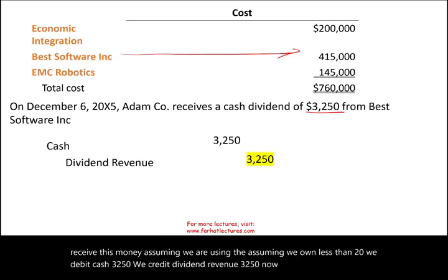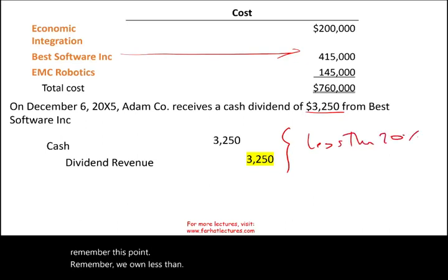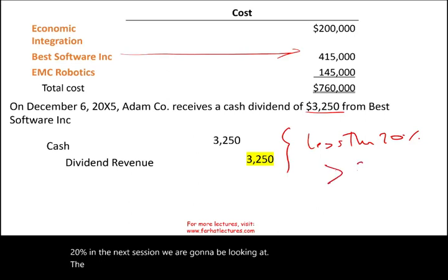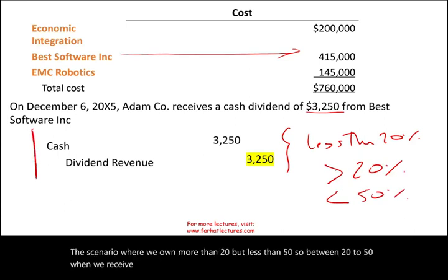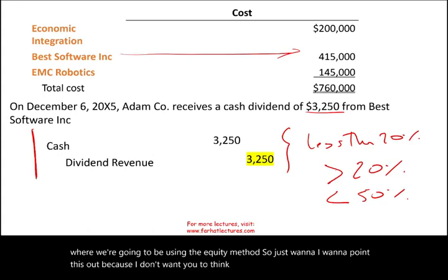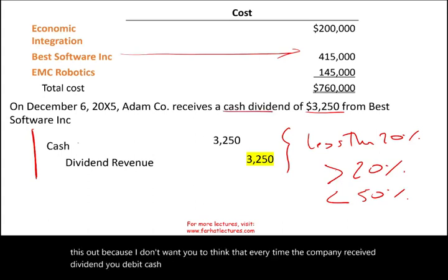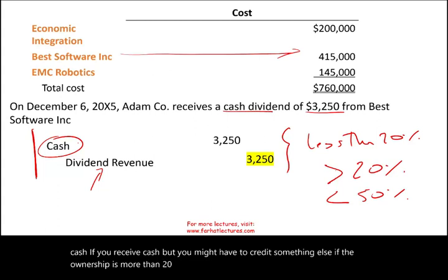I want you to remember this point — we own less than 20 percent. In the next session, we are going to look at the scenario where we own more than 20 percent but less than 50 percent, using the equity method. When we receive a dividend under that scenario, the transaction will be treated differently. You will always debit Cash if you receive cash, but you might have to credit something else if ownership is more than 20 percent.